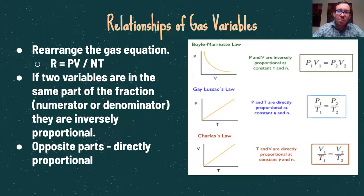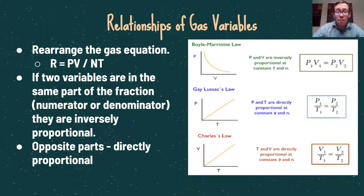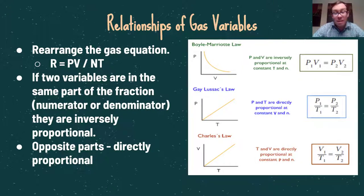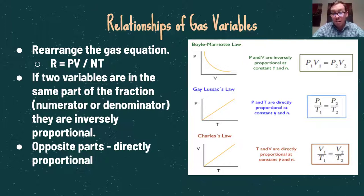We can also focus on the relationships between gas variables using PV = nRT rearranged as R = PV / nT. If two variables are in the same part of the fraction — numerator or denominator — they are inversely proportional, meaning as one increases the other decreases, such as pressure and volume. If they are in opposite parts of the fraction, they are directly proportional — for example, pressure and temperature, and volume and temperature both increase together.